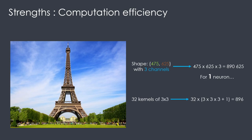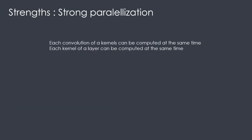To compute parameters: 3 by 3 kernels on three channels, plus the bias inherent to each kernel, times 32 kernels leads to a total of 896 parameters. Another great strength is parallelization — each convolution of a kernel can be computed at the same time as the others. Every part of the image can be computed simultaneously by the kernels, and each kernel of a layer can also be computed at the same time. This is extremely good and not the case for recurrent neural networks.